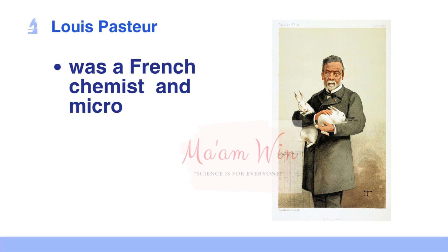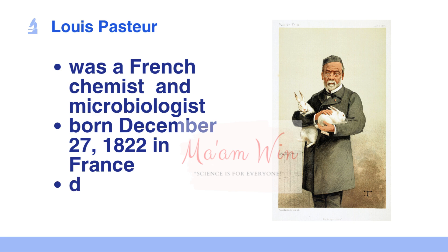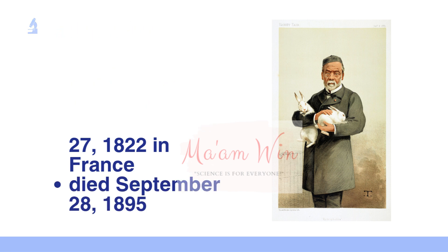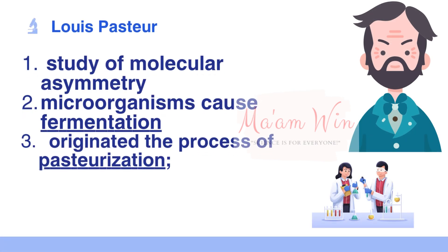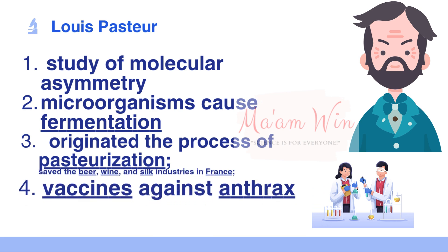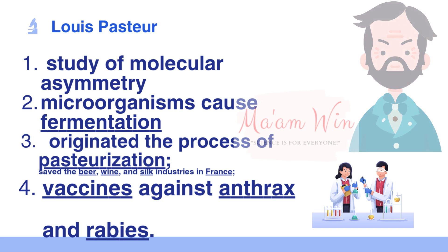Louis Pasteur was a French chemist and microbiologist born on December 27, 1822 in France, and died December 28, 1895. He was the first to study molecular asymmetry. He discovered that microorganisms cause fermentation and disease. He invented the process of pasteurization, and helped save the beer, wine, and silk industry in France. He also created vaccines for anthrax and rabies.